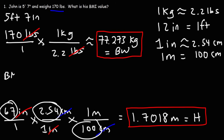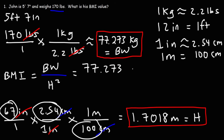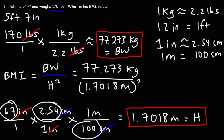Now let's calculate John's BMI, his body mass index. It's his body weight divided by the square of his height. We have the body weight in kilograms — 77.273 — and his height in meters — 1.7018. We just plug it into the formula, remembering to square the number on the bottom. You should get approximately 26.68. That's John's BMI.